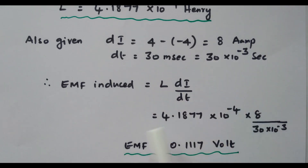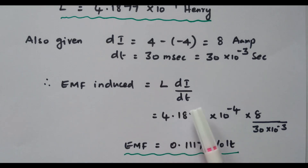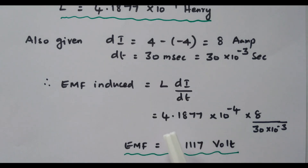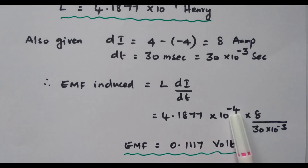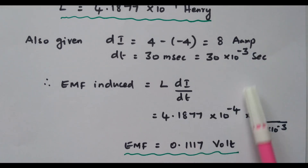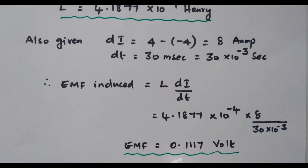Now we can substitute this value. The EMF induced is E = L × di/dt. So E = 4.1877 × 10⁻⁴ × 8 / (30 × 10⁻³). By simplifying, we get 0.1117 volts. The EMF induced is 0.1117 volts.